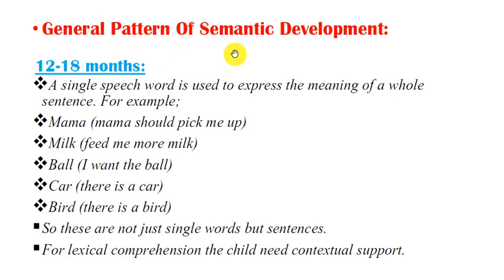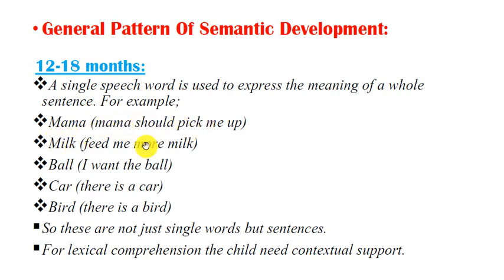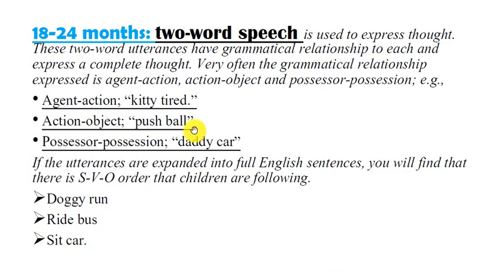The general pattern of semantic development begins at 12 to 18 months of age, where a single word is used to express the meaning of a whole sentence. For example, 'mama' may mean 'mama should pick me up,' 'milk' means 'feed me more milk,' 'ball' means 'I want the ball,' 'car' means 'there is a car,' and 'bird' means 'there is a bird.' These are not just single words but full sentences. For lexical comprehension, the child needs contextual support.